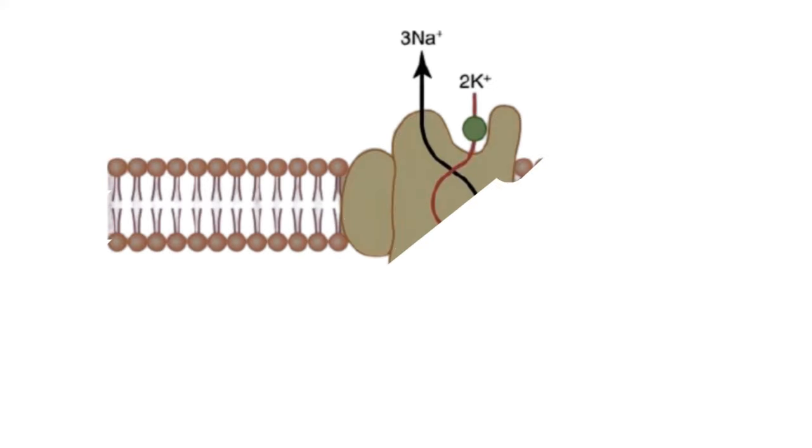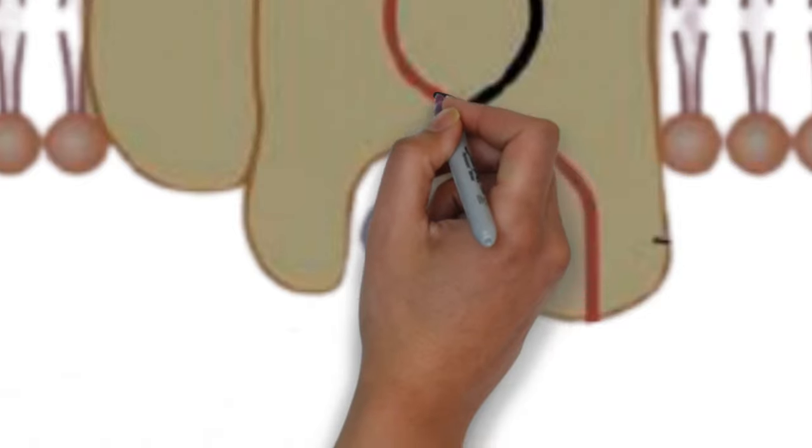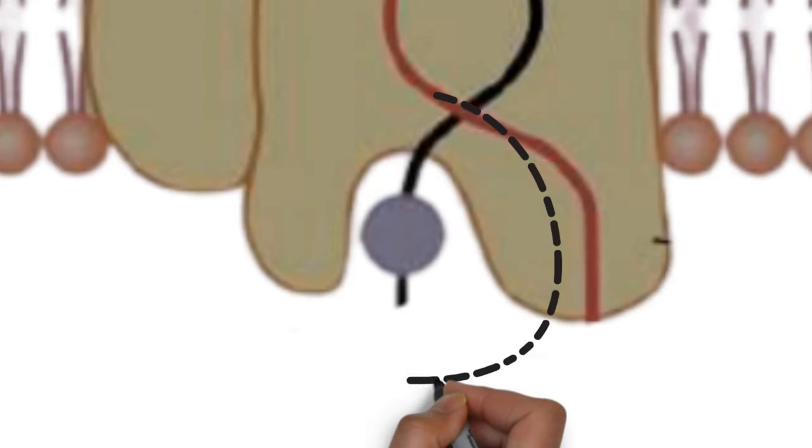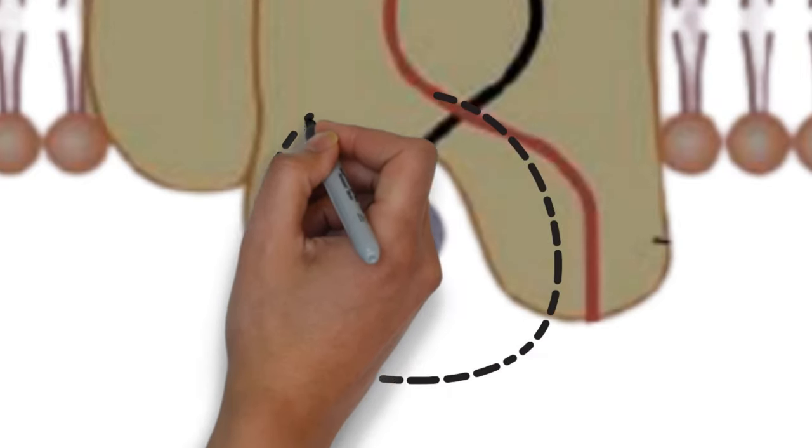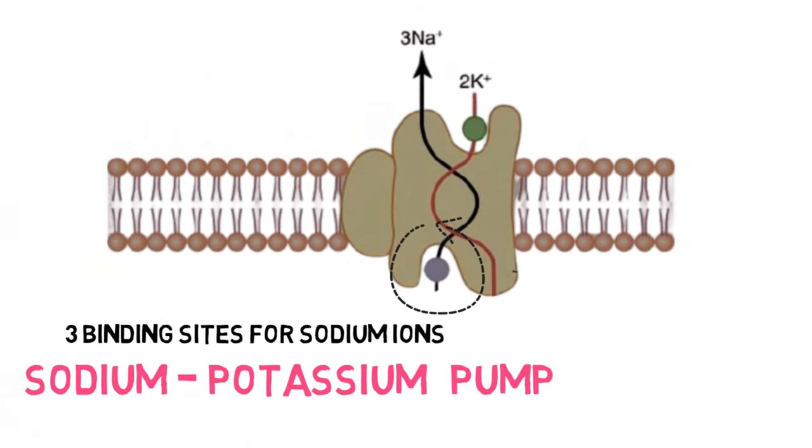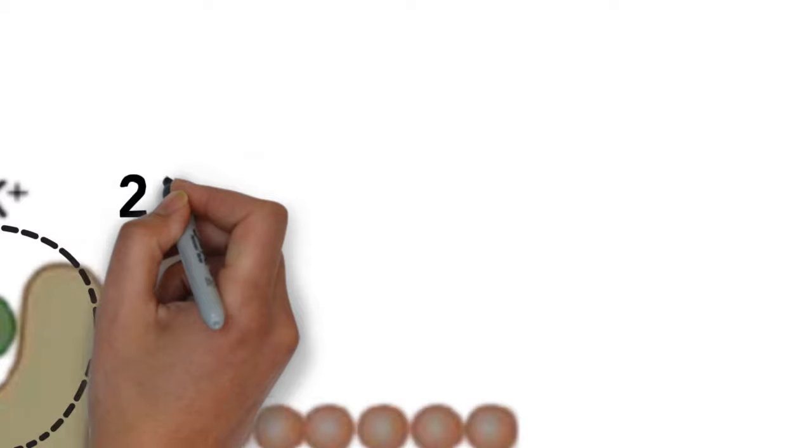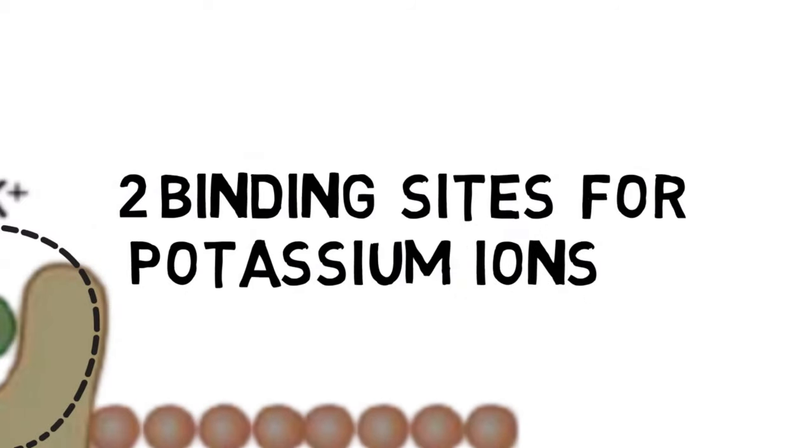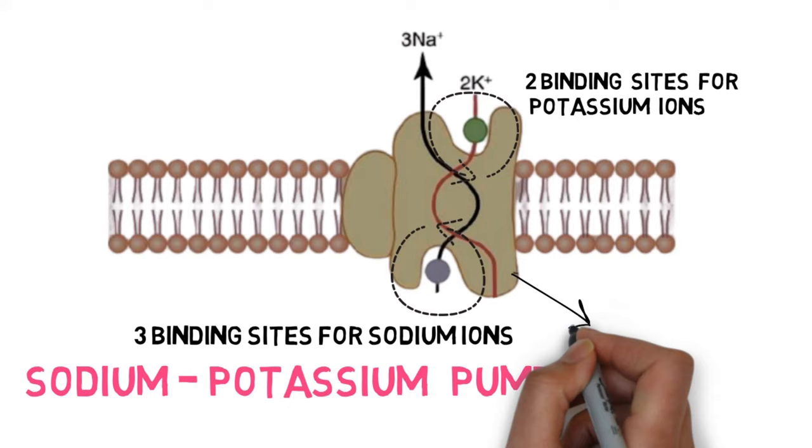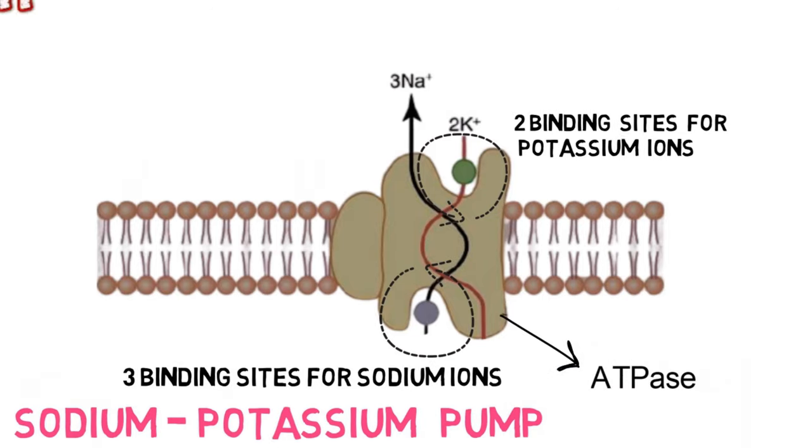Now let's have a look at this pump to see the sites and ATPase. This is the sodium potassium pump and as you can see, this area of the protein that protrudes to the inside of the cell has three binding sites for sodium ions. This area which faces the exterior has two binding sites for potassium ions. There is ATPase activity near the sodium binding sites.